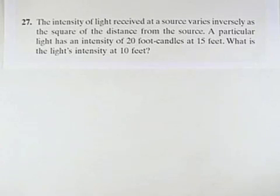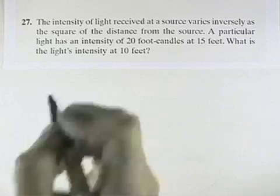The intensity of light received at a source varies inversely as the square of the distance from the source. Well, let's look at that first.